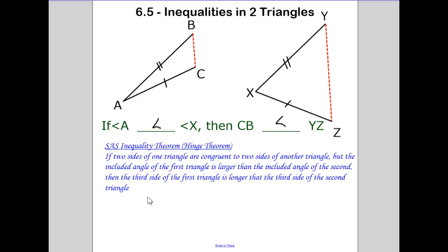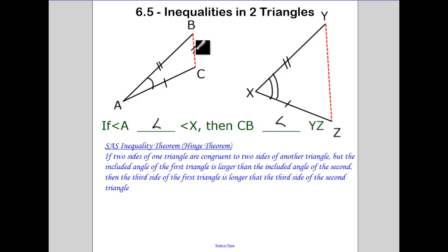If two sides of one triangle are congruent to two sides of another, but the included angle is larger — or smaller — than that of the second, then the third side is larger or smaller accordingly. Because AB and AC, and XY and XZ, are locked into place: if the angle in one triangle is smaller than the corresponding angle, then that opposite side is going to be smaller than the other.